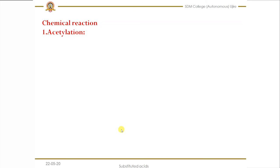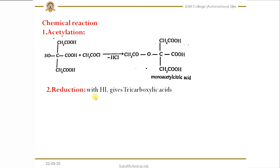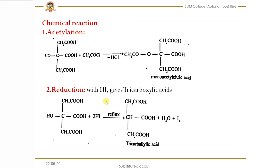Next we will see the chemical reactions of citric acid. The first reaction is acetylation. When you treat citric acid with acetyl chloride, the hydrogen of the hydroxy group is replaced by the acetyl group, and as a result we get monoacetyl citric acid. The second reaction is reduction with hydrogen iodide. When you treat citric acid with hydrogen iodide and reflux at higher temperature, the hydroxy group is removed, and as a result we get the tricarboxylic acid — the only change is removal of the hydroxy group.